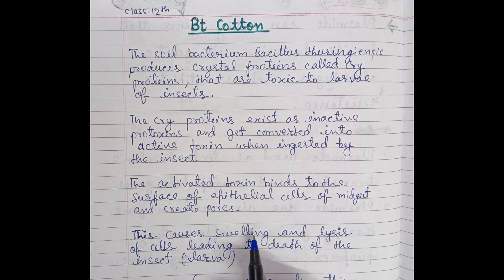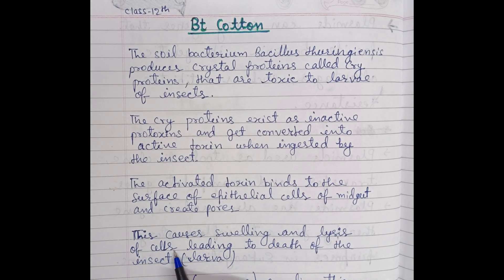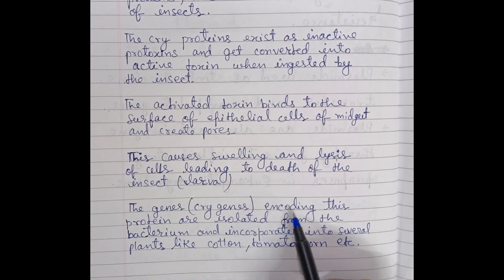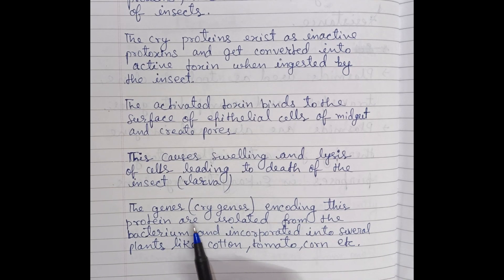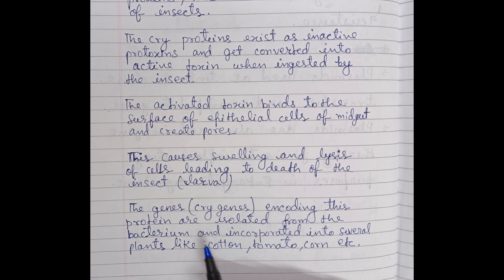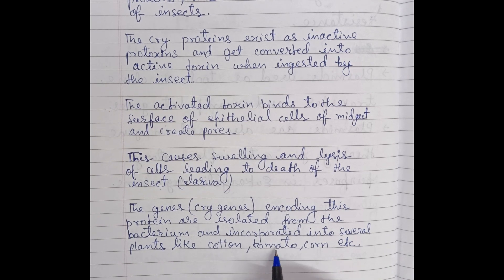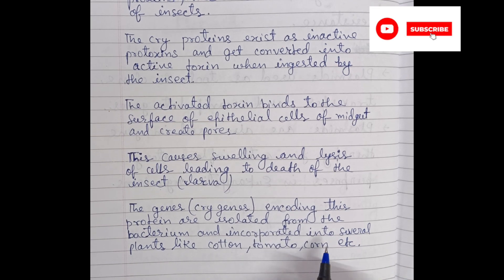This causes swelling and lysis of cells, leading to death of the insect. The cry genes encoding this protein are isolated from the bacterium and incorporated into several plants like cotton, tomato, corn, etc.